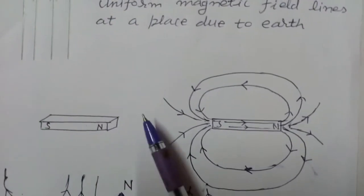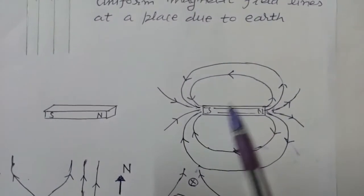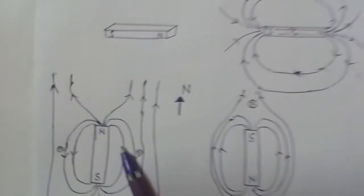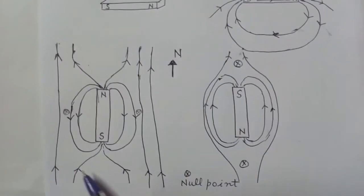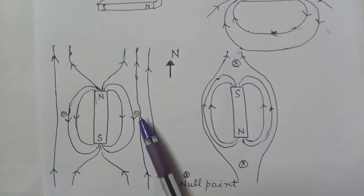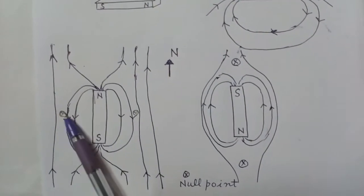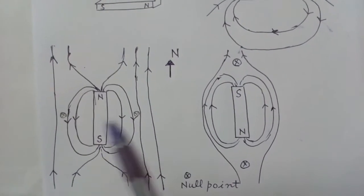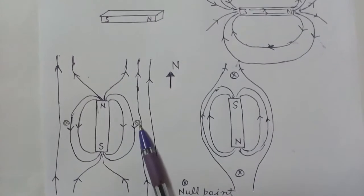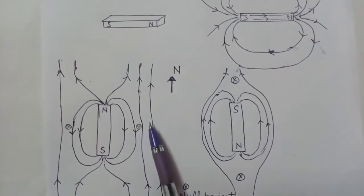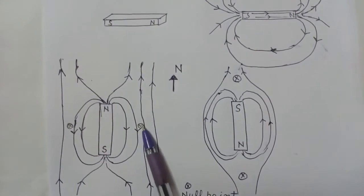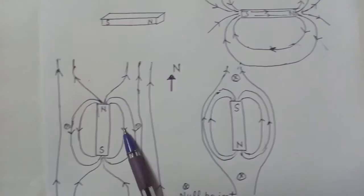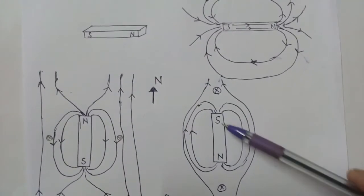Field lines near a small bar magnet will look like this. If you keep the north pole of the bar magnet towards north, then the pattern of field lines will show two points on its equatorial line where the magnetic field is zero — these are called null points. This is because the magnetic field due to earth and due to the magnet are opposite to each other at those points, so the net field is zero.